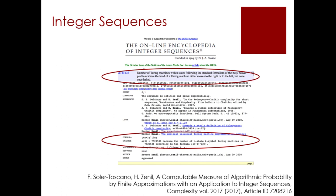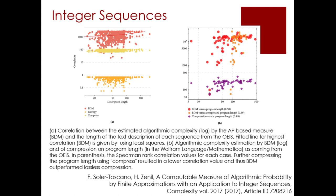In the database is not only the sequence, but also the code in one or more computer languages and the description of those sequences. What we found was very interesting: the textual description length, as extracted from the database, is — as illustrated on the left — best correlated with BDM than with any other measure such as Shannon entropy or lossless compression.